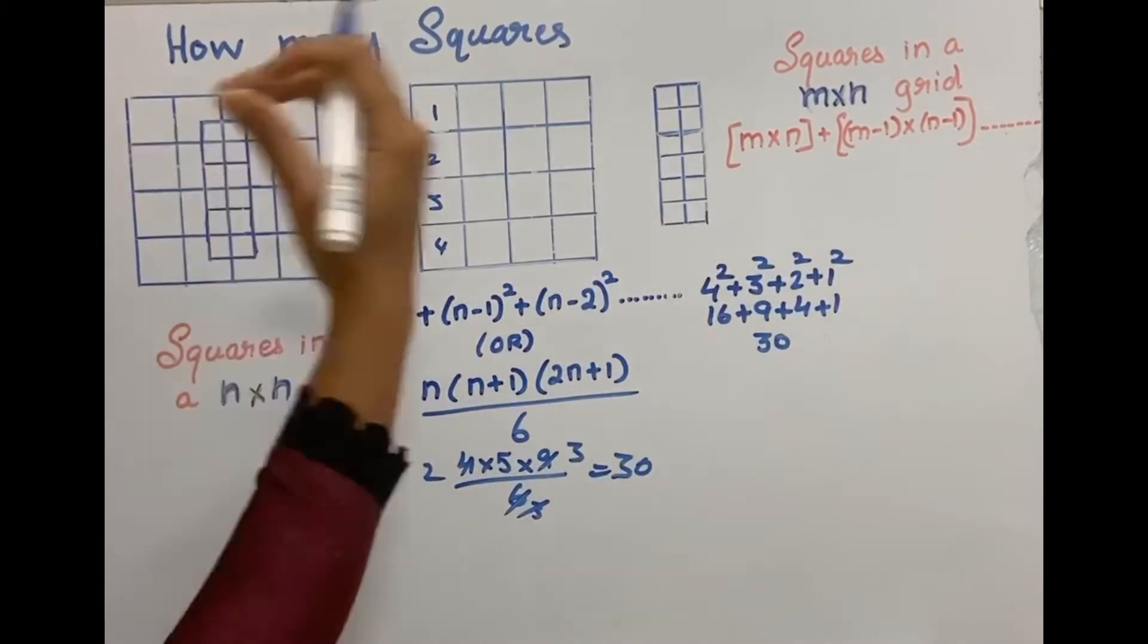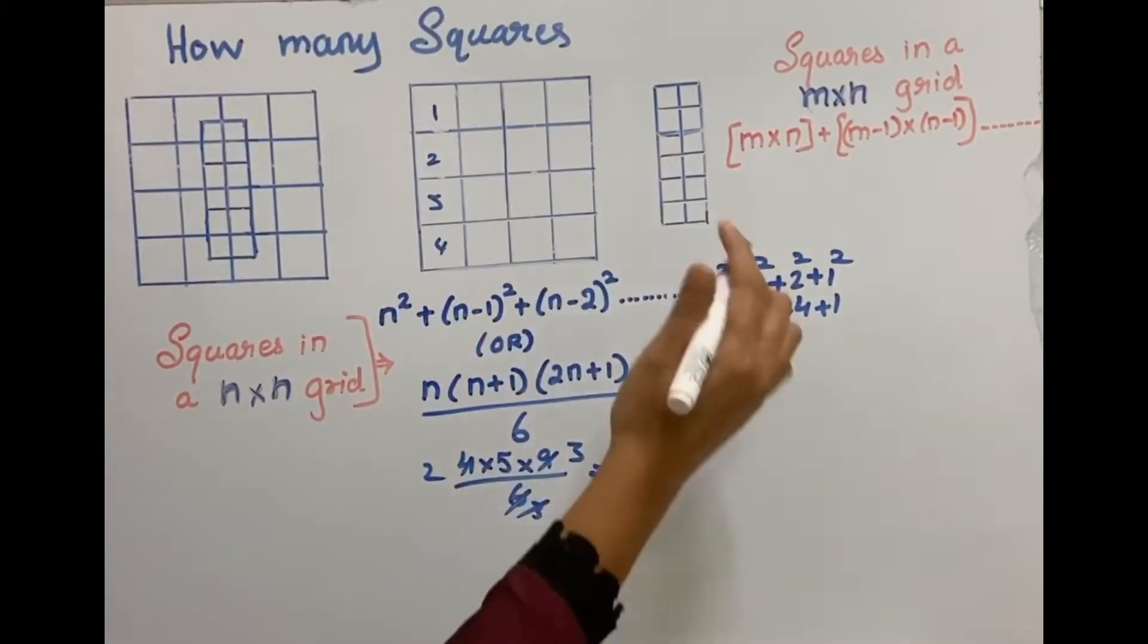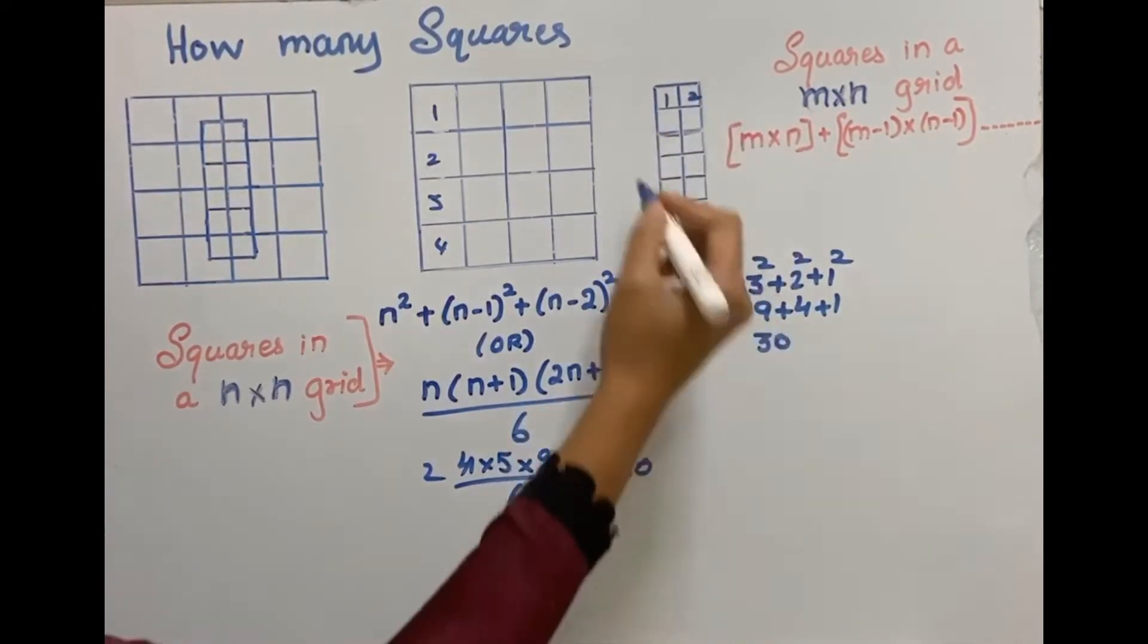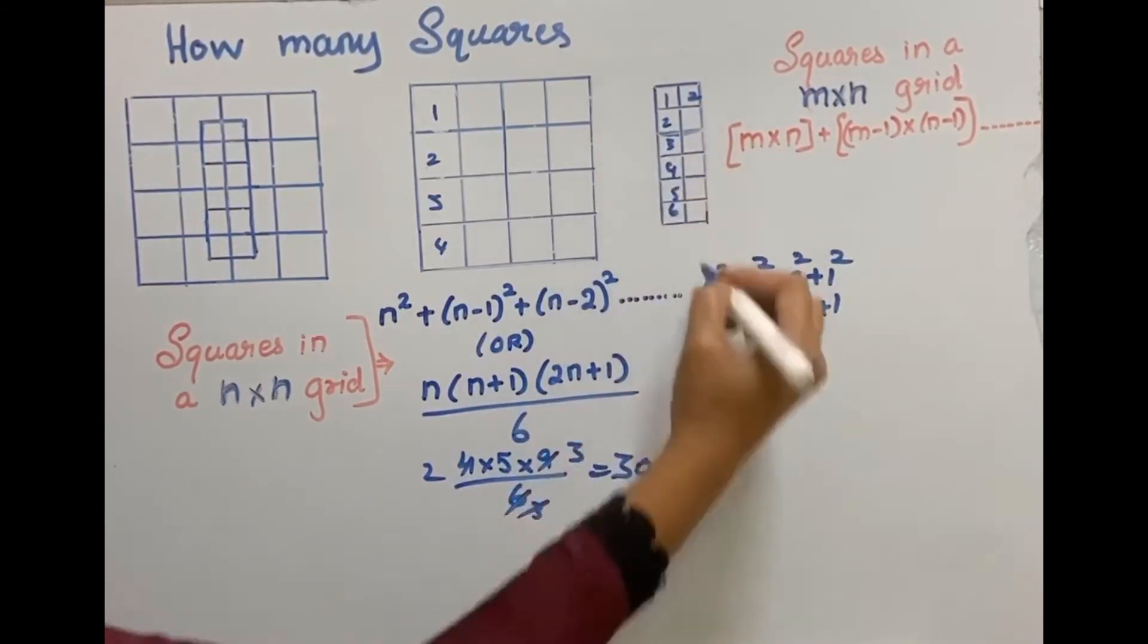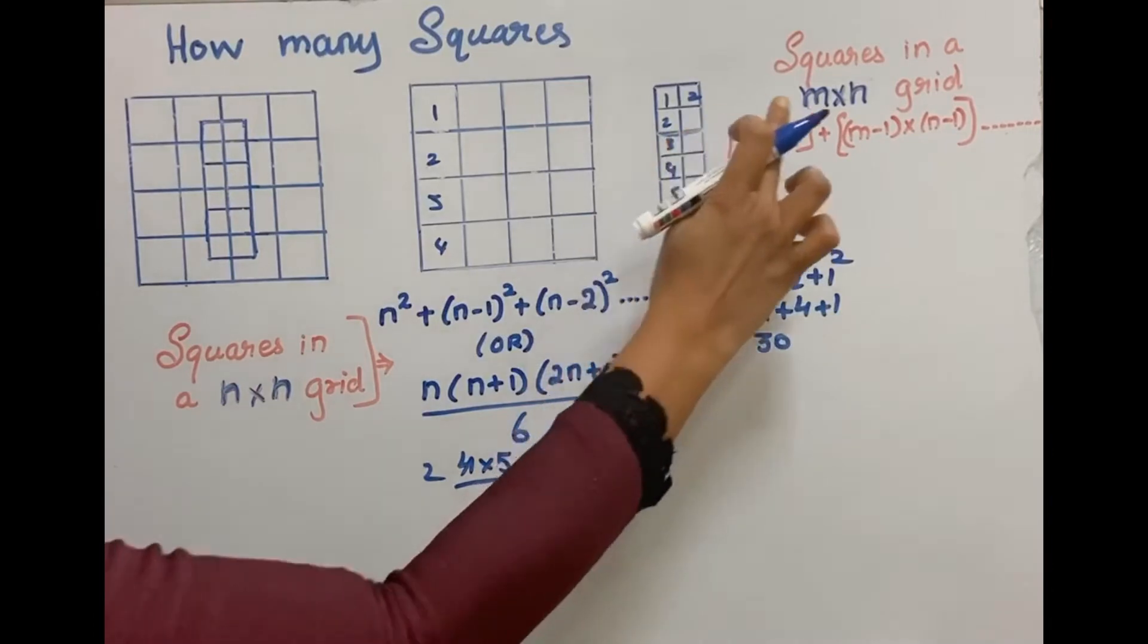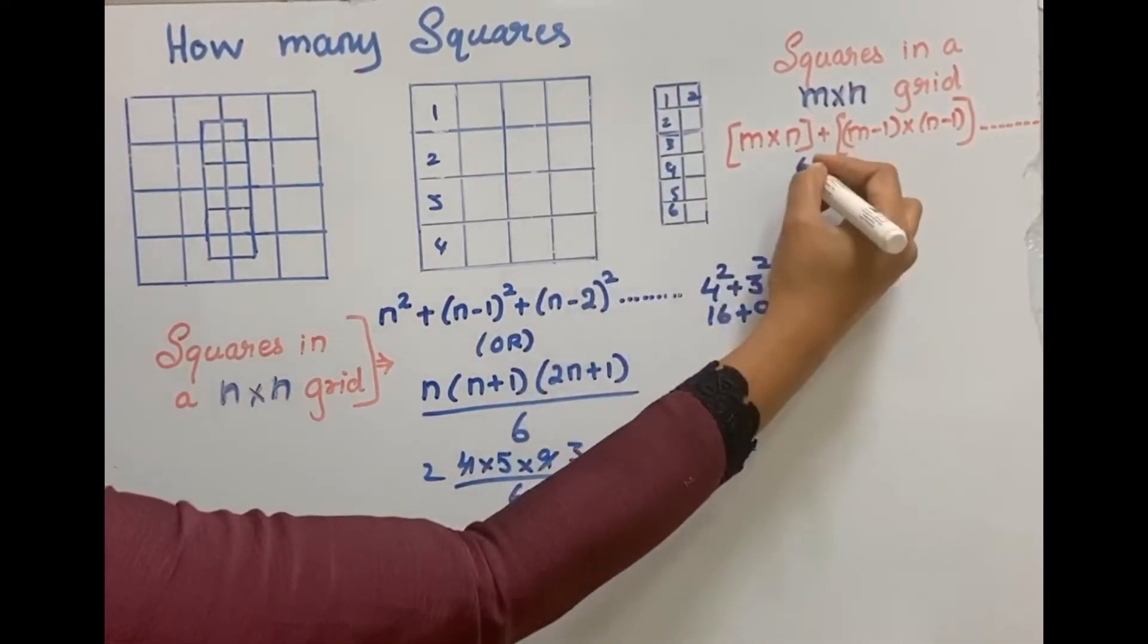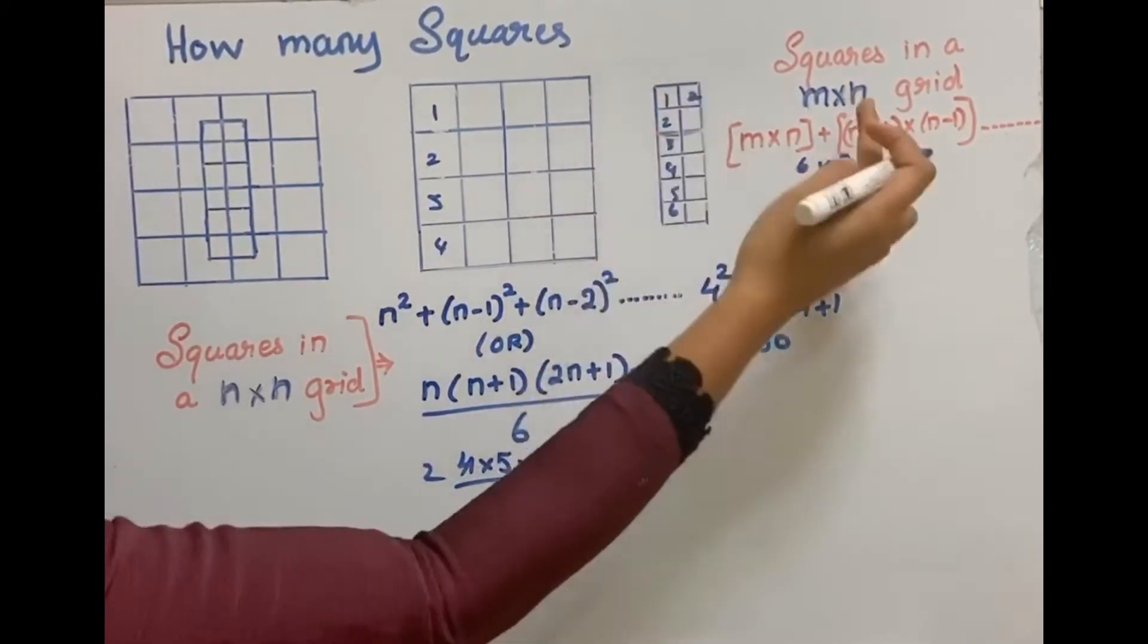Next, the middle part. Middle part, it's a rectangle. Squares in a rectangular grid. That is, here the horizontal, it's 2 squares. Vertical, let's say it's a rectangle, right? So 1, 2, 3, 4, 5, 6. So in this case, it's m and n is different. m is 6 and n is 2.